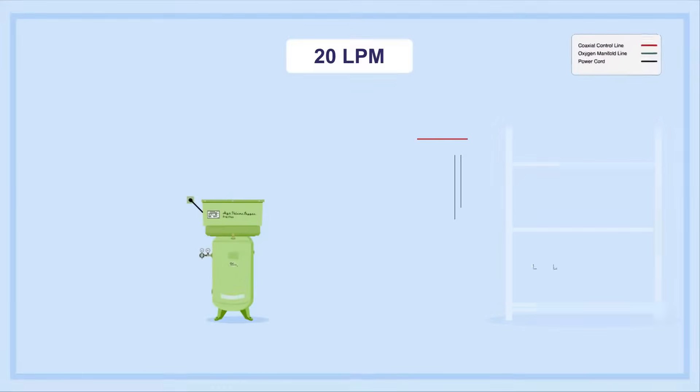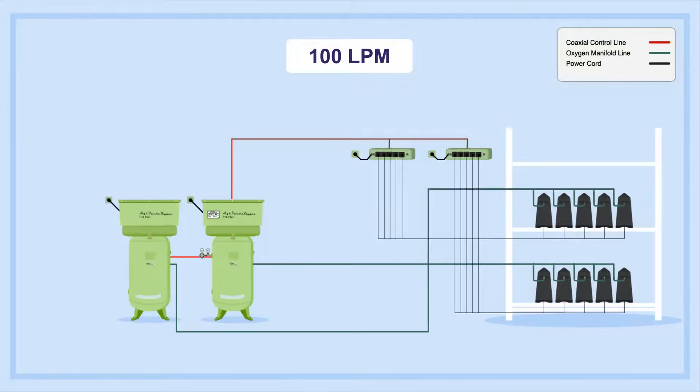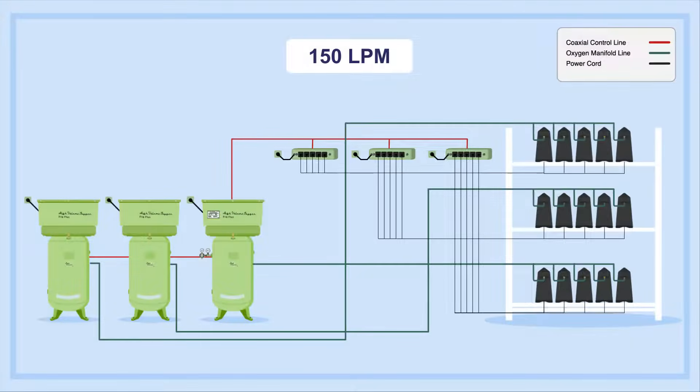HVO systems are modular and expandable up to 200 or more liters per minute. Using multiple oxygen concentrators ensures that the loss of a single concentrator doesn't stop oxygen generation. In addition, you can add components to build a large-scale system with multiple points of redundancy to keep your system running.